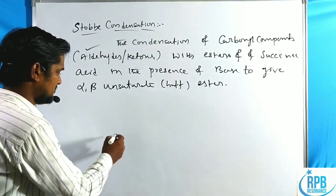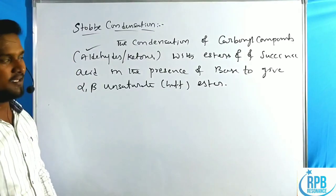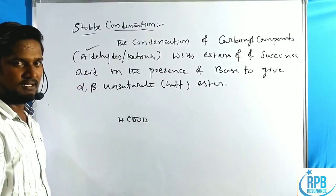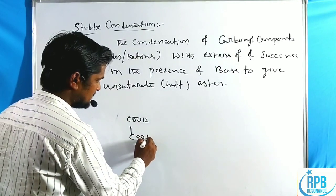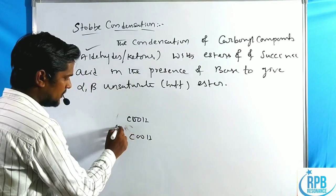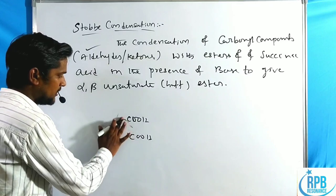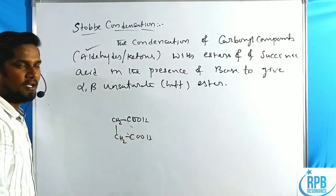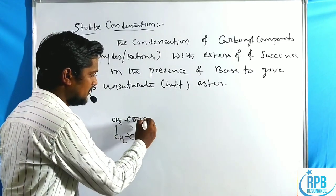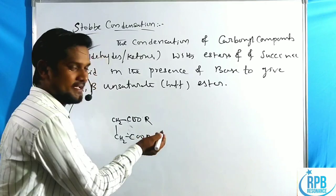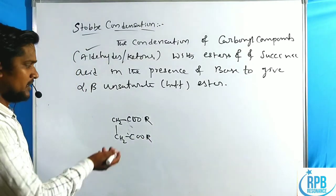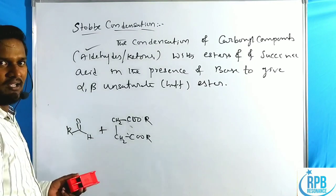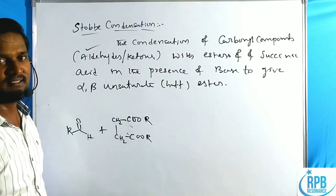Now the general representation of Stobbe condensation. When two carboxylic acids are present with only hydrogen, it is formic acid; with no methylene groups it is oxalic acid; with one methylene group it is malonic acid; with two methylene groups it is succinic acid. Here we use esters of succinic acid — the R group may be ethyl, isopropyl, or methyl. The succinic ester is treated with carbonyl compounds — either aldehyde or ketone — and aldehydes are more preferable.